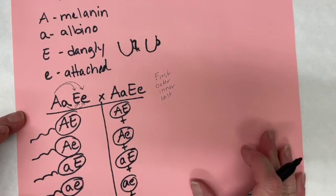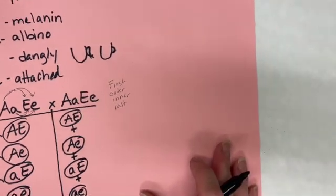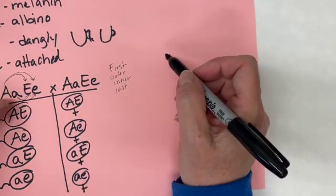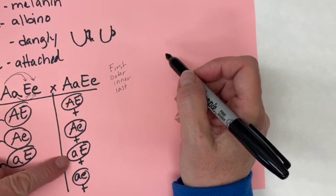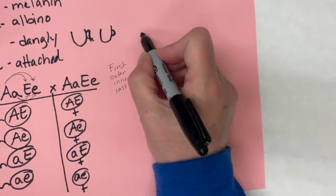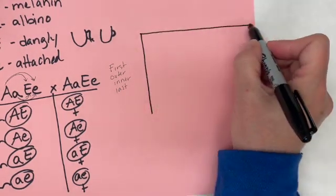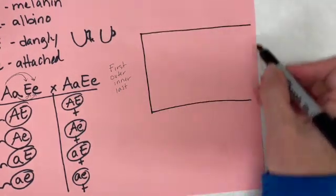The next thing that we do is we put them into a Punnett square. So let's draw our Punnett square. This Punnett square is going to be a four by four Punnett square, so it's going to be kind of big. Leave yourself plenty of room as you draw out your four by four Punnett square.